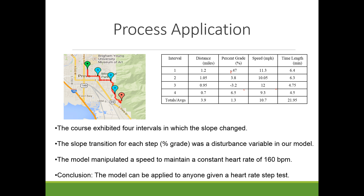The instructor noted that maintaining 160 beats per minute at 11 to 12 miles per hour on flat ground is not typical for an average person. The team confirmed that the subject — Tyler Thatcher — is an All-American runner and one of the top runners in the nation, which means the data represents a somewhat skewed baseline.